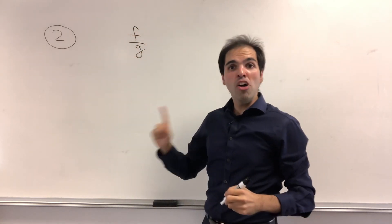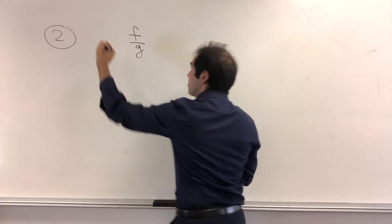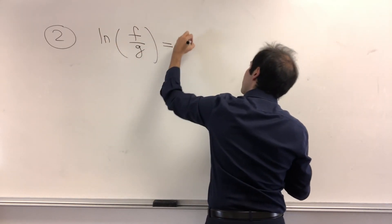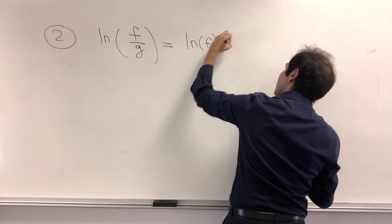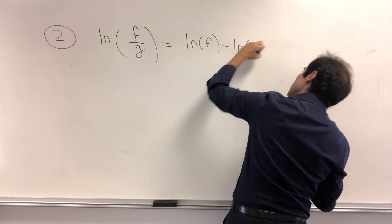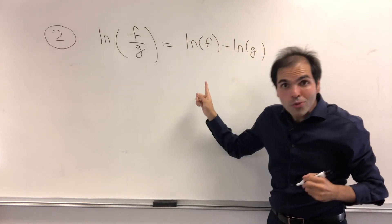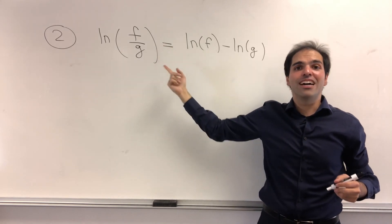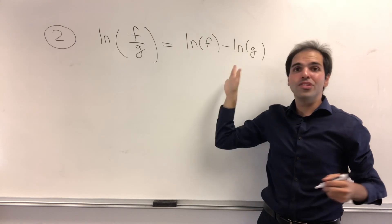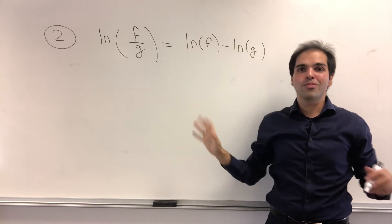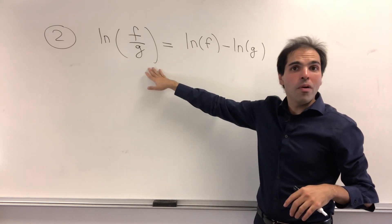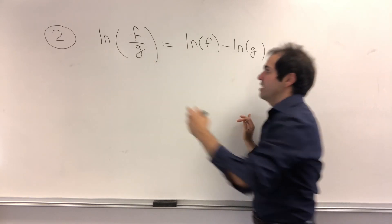And how about we apply ln to this? Then ln of f over g, that becomes ln of f minus ln of g. And small disclaimer, so this proof only works if f and g have the same sign, otherwise you take ln of negative numbers. So it's slightly weaker than the usual proof. And now,